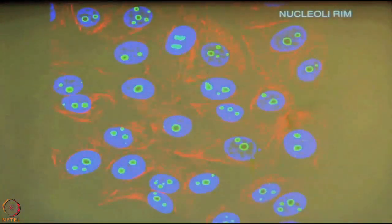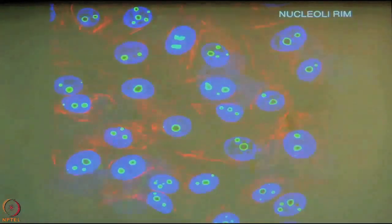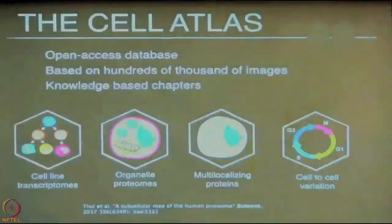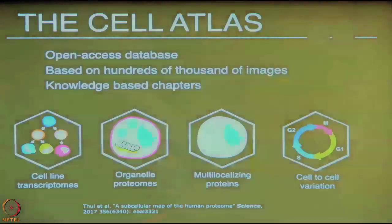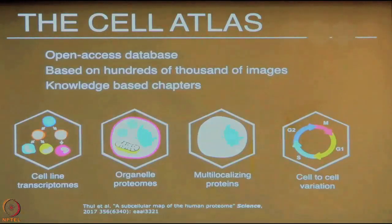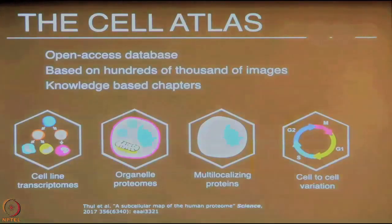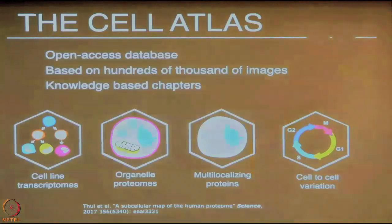Immunofluorescence produces extremely beautiful and artistic images, but they are also very informative. In the Cell Atlas, we have produced knowledge-based chapters where you can read about cell line transcriptomics, the different organelle proteomes, and multi-localizing proteins — which are extremely interesting. These are proteins that can be found in both the Golgi and the ribosomes, for example, and there is a lot more research to be done about them.